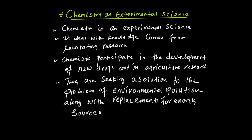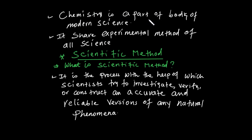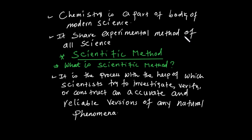They are using chemical solutions for the environment, along with replacements for energy sources. In addition, chemistry is a part of the body of modern science. It is modern science, and it becomes an experimental method.